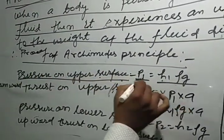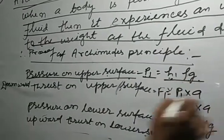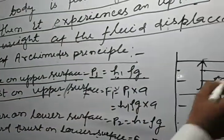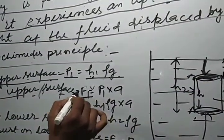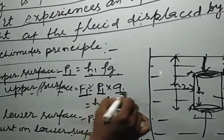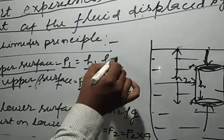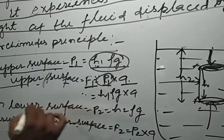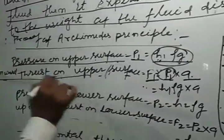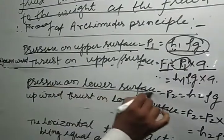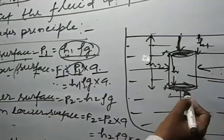The pressure exerted on the upper surface is P1 = H1·ρ·g. The downward thrust on the upper surface is F1 = P1 × A = H1·ρ·g·A. The pressure on the lower surface is P2 = H2·ρ·g, acting on that surface.